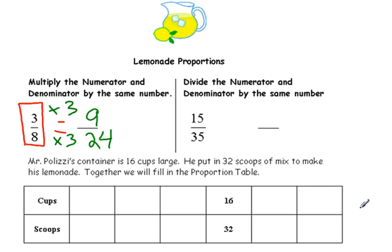To check whether or not my ratios are equivalent, I can do 8 multiplied by 9, and I can do 3 multiplied by 24. So 8 multiplied by 9 is 72. 3 multiplied by 24 is also 72. I have an equivalent proportion.